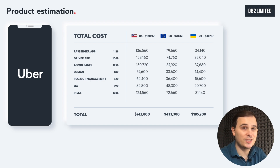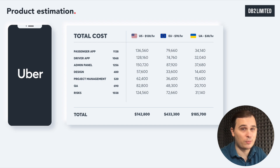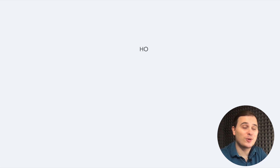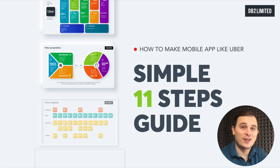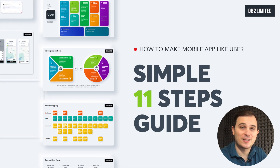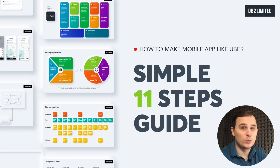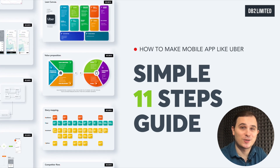I know that these numbers may scare you, but one of the things you should know is that you could always create a minimum viable version of your product and invest up to 50 grand, which sounds more affordable, right? If you don't have experience with how to make a mobile app like Uber, I've prepared for you a simple 11-step guide which would help you get a better understanding of what kind of things you need to do.